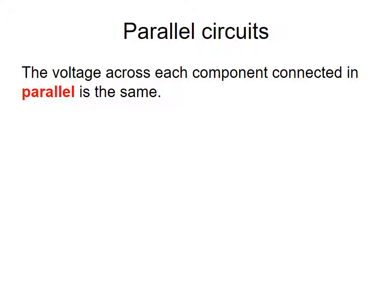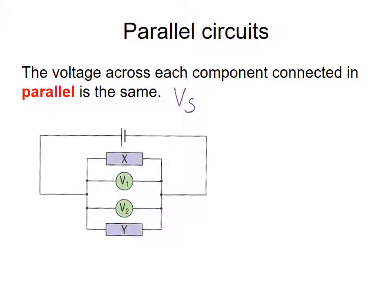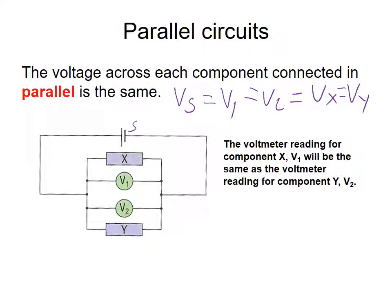The other kind of circuit is a parallel circuit. In a parallel circuit the voltage across each component connected in parallel is the same: Vsupply equals V1, which equals V2, which equals Vx and Vy — they're all equal. The voltage is the same anywhere in the circuit.